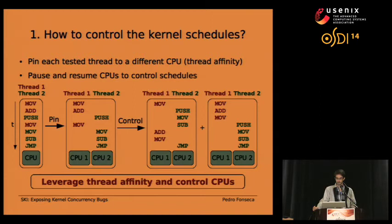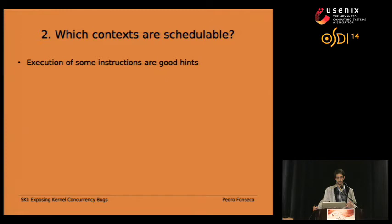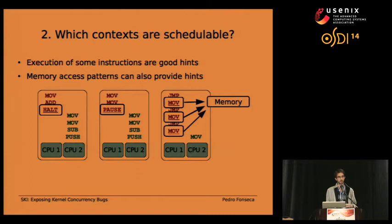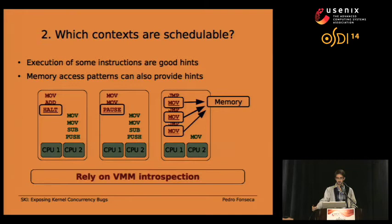We still have an open question: how do we know whether a CPU is making progress or waiting, for example on a spin lock? We observed that some instructions are a good hint that a CPU is not making progress. For example in x86, the halt instruction tells us the CPU is waiting for an interrupt, while the pause instruction is a strong hint the CPU is in a spin lock. Additionally, memory access patterns can be a hint — if a CPU continuously accesses the same memory location and gets the same values, it's likely waiting on a spin lock. We address this using virtual machine monitor introspection techniques.